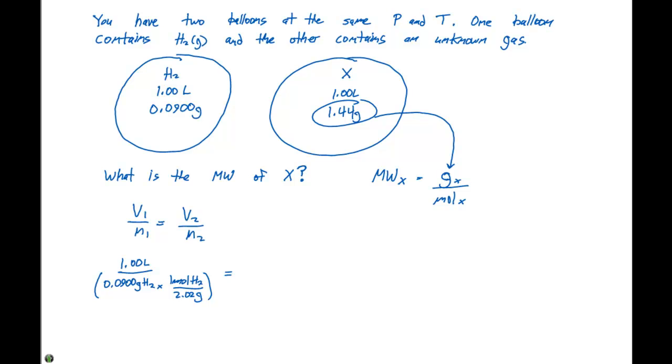That's gonna equal V2, which our unknown gas has a volume of 1.00 liters, divided by the number of moles of X. If we go through and we solve for this, our number of moles of X is gonna equal 0.0446 moles.